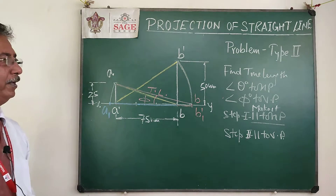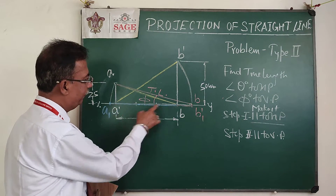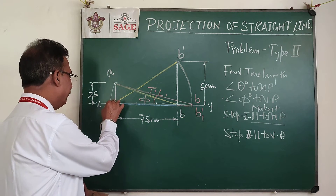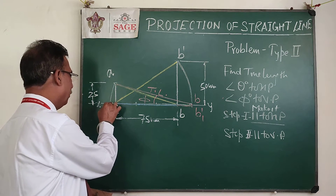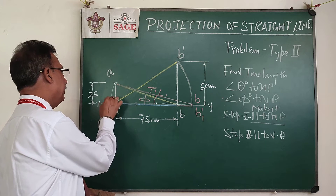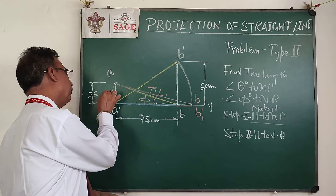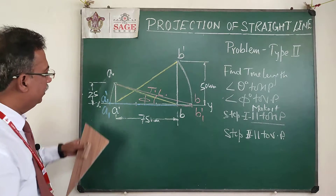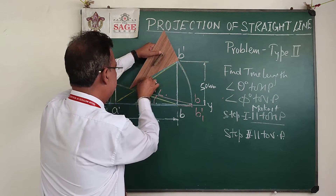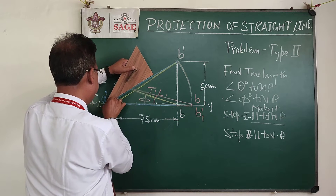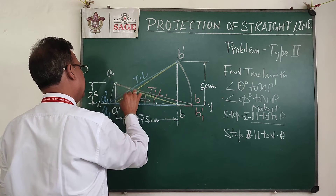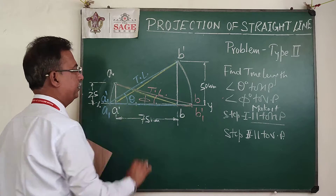The new point is called A1. The line B A1 is now on the VP. A1 will be on the XY line, so the locus of A dash will also be on XY — making this point A1 dash. Joining A1 dash with B dash gives the true length again, and this angle will be theta.